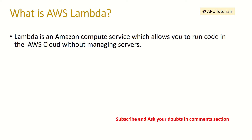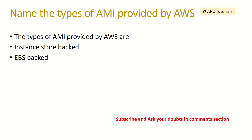What is AWS Lambda? Lambda is an Amazon compute service which allows us to run code in the AWS cloud without managing servers. We can write AWS Lambda code in any language such as Python, Node.js, etc. Name the types of AMI provided by AWS. The different types of AMI are instance store-backed and EBS.